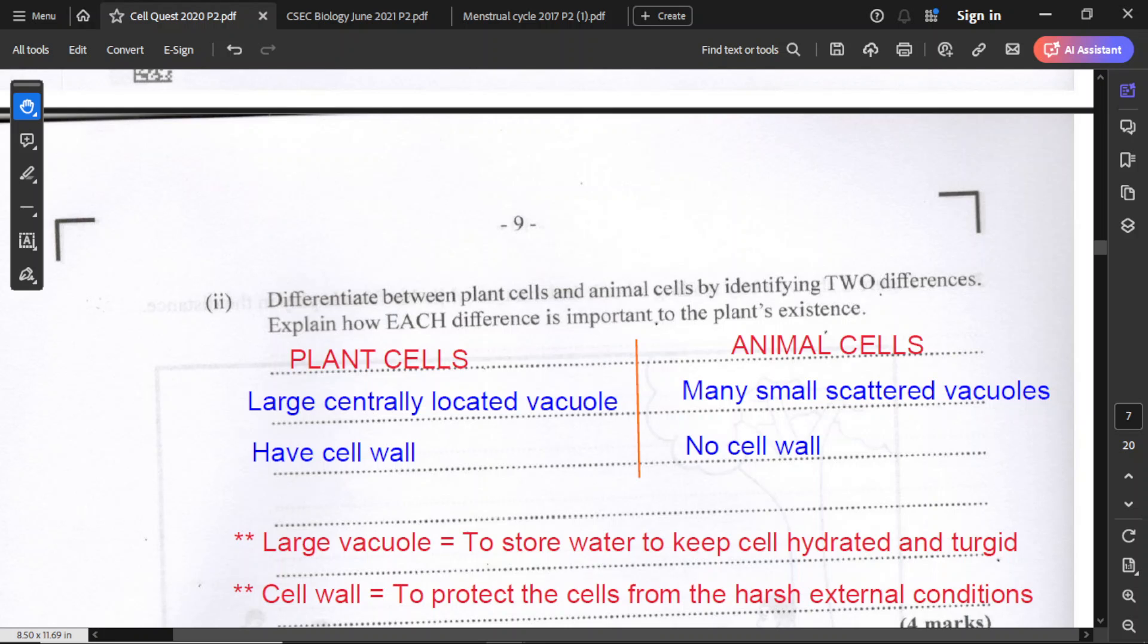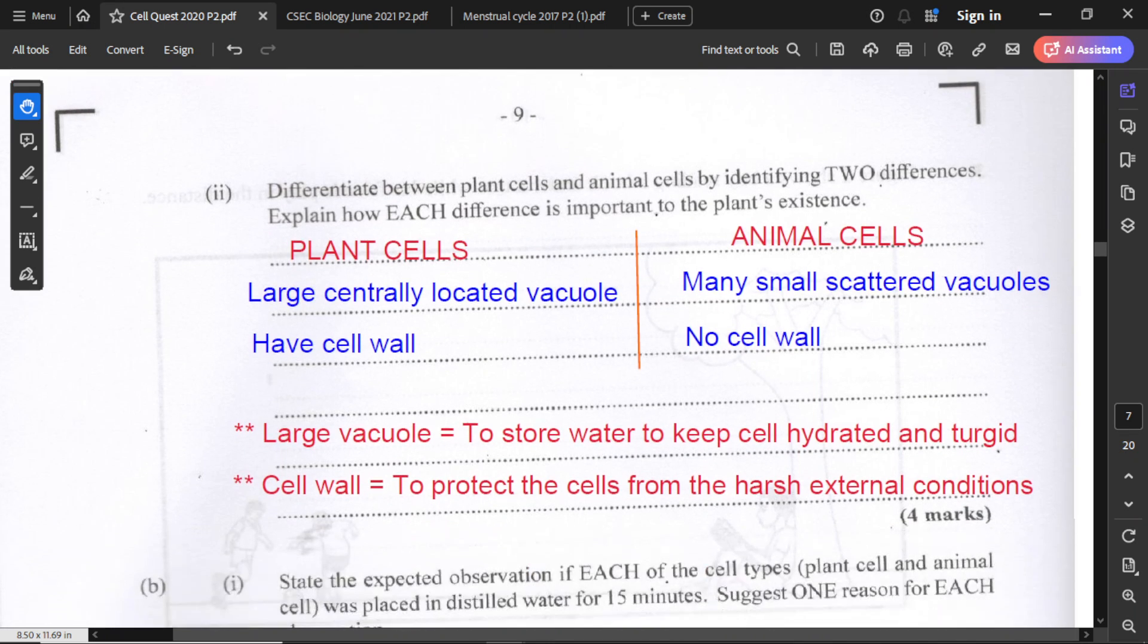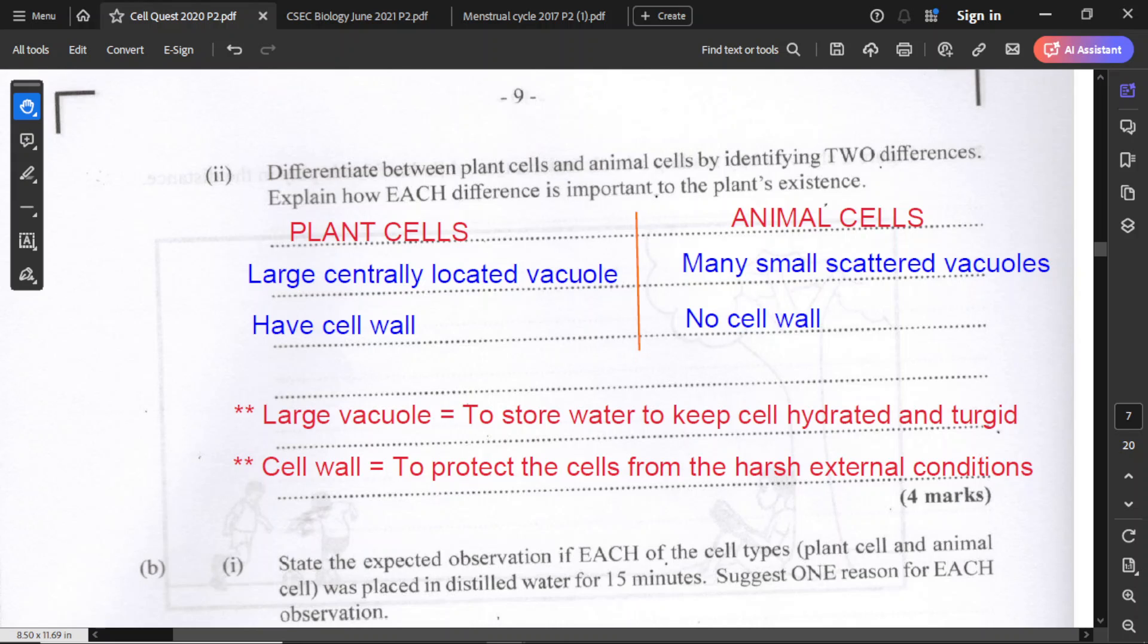In terms of their importance to the plant's existence, the large vacuole is to store water to keep the cell hydrated and turgid. The cell wall will provide protection from the harsh external conditions.